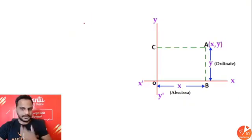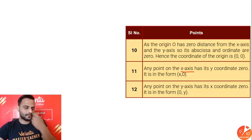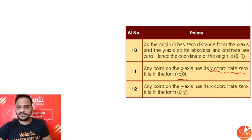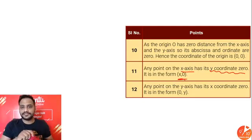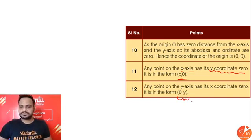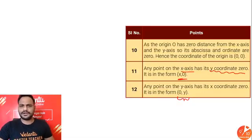The coordinates of the origin are (0, 0). If a point is on the x-axis, its y-coordinate is 0, so it takes the form (x, 0). If a point is on the y-axis, its x-coordinate is 0, so it takes the form (0, y).